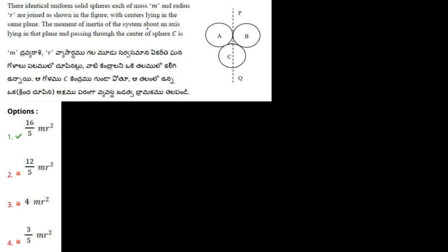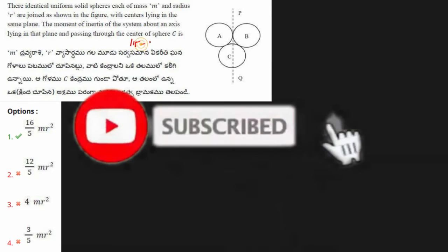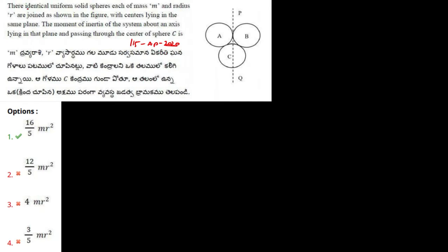Hi everyone, in this video we are going to discuss question number 115 of APM set 2020. In this question it is said that there are three identical uniform solid spheres. The mass of all these spheres is M and the radius is R.